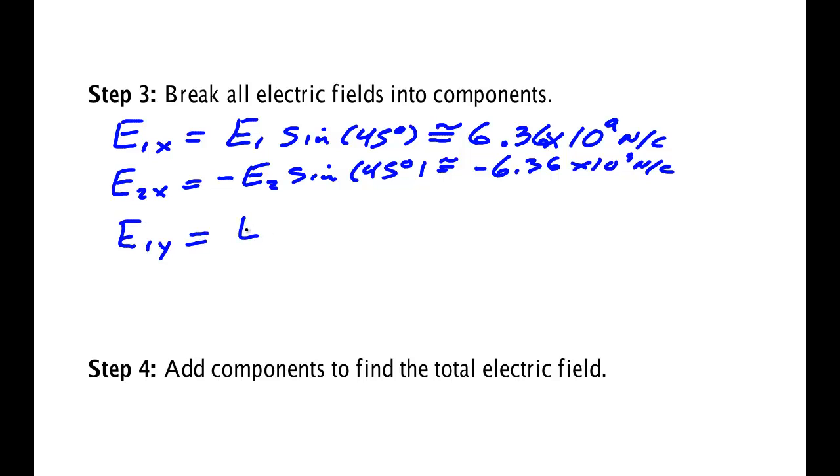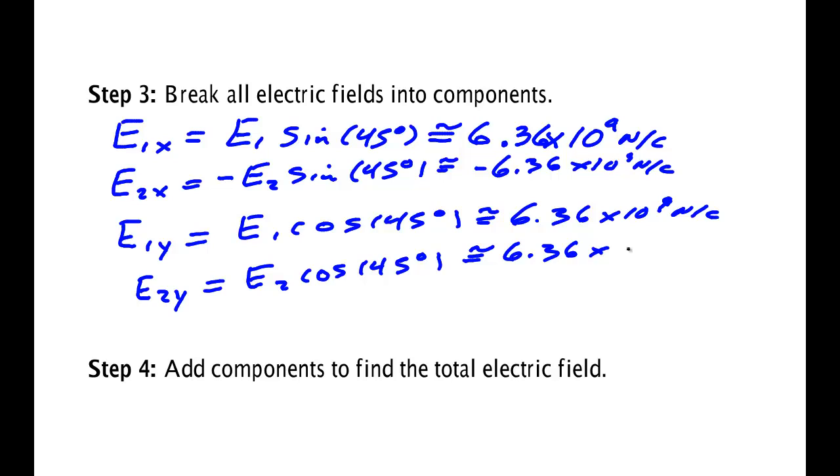E1y is E1 cosine of 45 degrees, and it turns out that's 6.36 times 10 to the 9th newton per coulomb. And E2y is E2 cosine of 45 degrees, and it's also 6.36 times 10 to the 9th newton per coulomb.